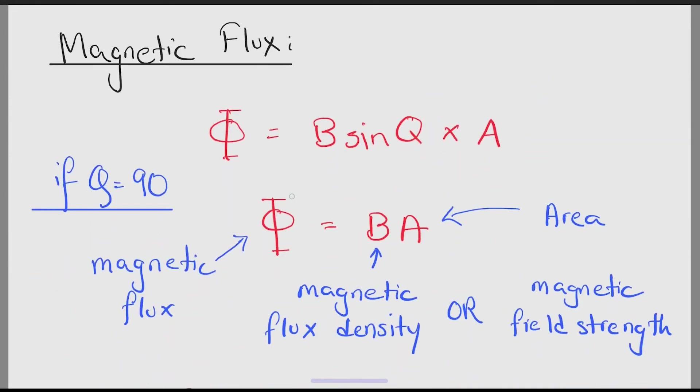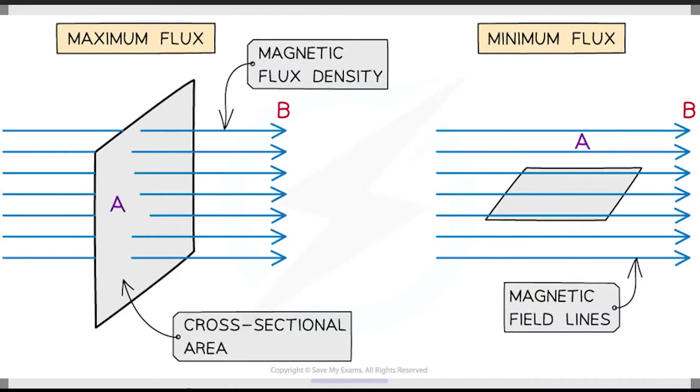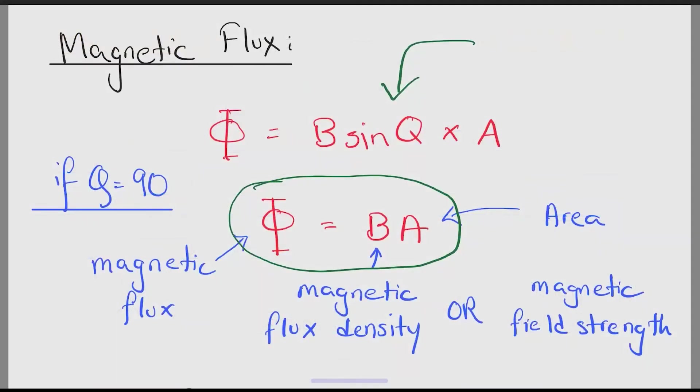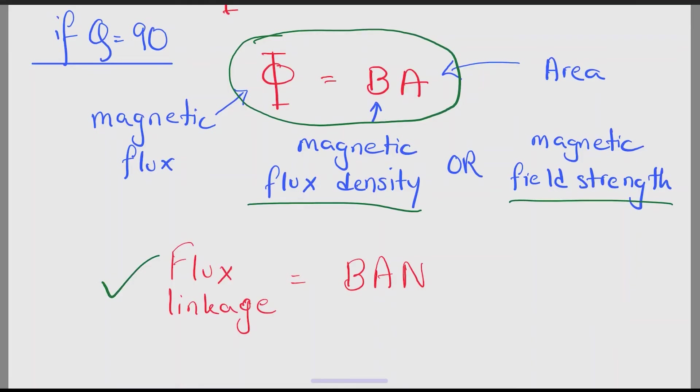The next topic is magnetic flux. In general, we can say magnetic flux equals magnetic flux density into area. However, we are assuming that theta is 90 degrees. That means the magnetic and electric field has an angle of 90 degrees. Magnetic flux density can also be called magnetic field strength. Moving on, this is the flux linkage formula.